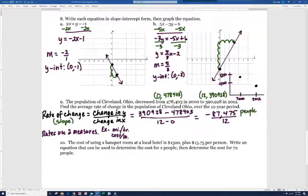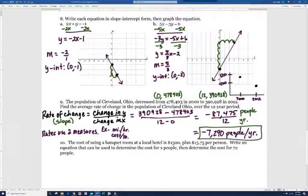And so this is 390,928 minus 478,403 over 12 minus 0. And you end up with negative 87,475 divide 12. And by the way, notice the numerator is the number of people. And the denominator is the number of years. And so our final answer when you divide by 12 here is minus 7,290 people per year. So the decrease in the population, it's going down that much each year.